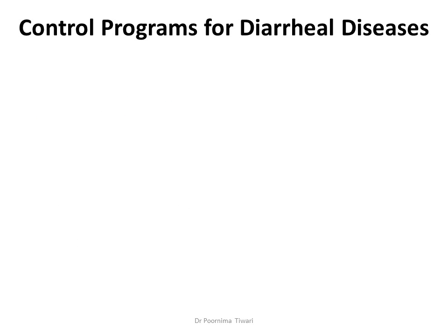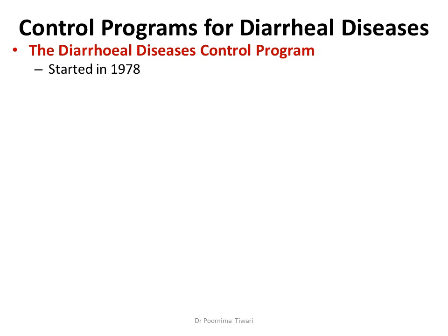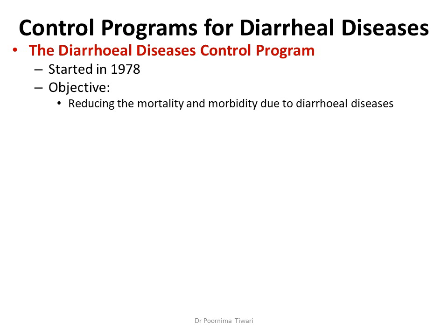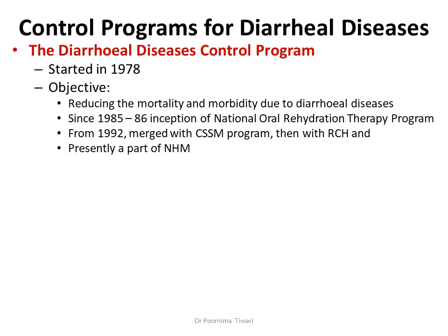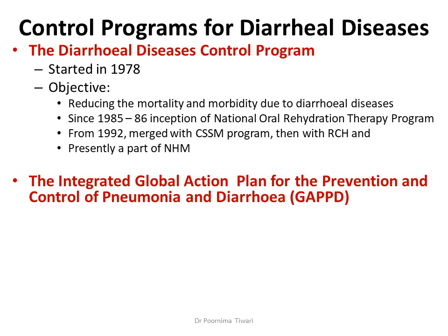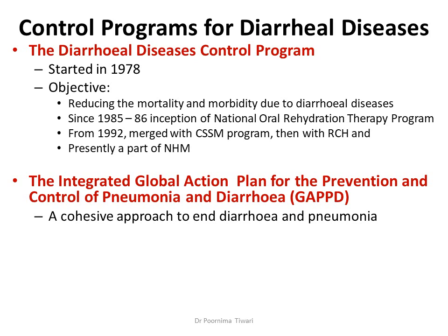The Diarrheal Disease Control Program was started in India in 1978 with the objective of reducing mortality and morbidity due to diarrheal diseases. It gained fresh impetus with the introduction of oral rehydration salt, and a national ORT program was incorporated. In 1992, it merged with the Child Survival and Safe Motherhood program, then with the Reproductive and Child Health program, and is presently part of the National Health Mission. Recently, the Integrated Global Action Plan for Prevention and Control of Pneumonia and Diarrhea was invoked — a cohesive approach to end diarrhea and pneumonia with specific goals for 2025.